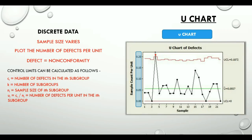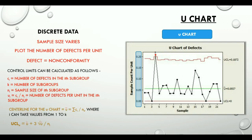The centerline for the U chart, or U-bar, is equal to the summation of CI divided by NI, where I takes values from 1 to K. The upper and lower control limits are calculated as U-bar ± 3 times the square root of U-bar divided by NI.